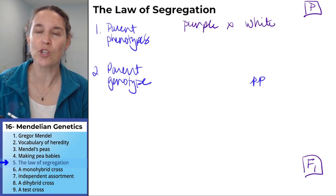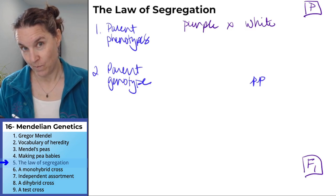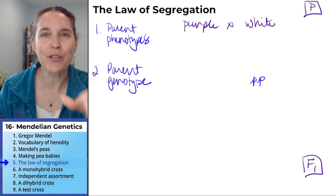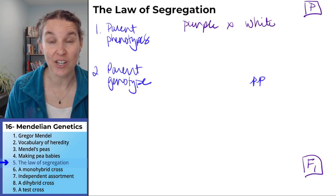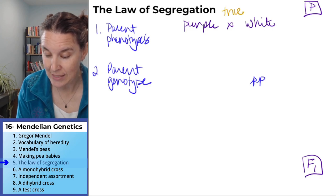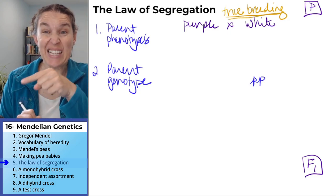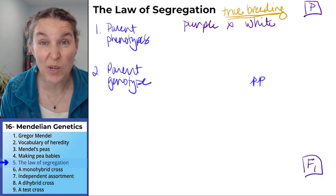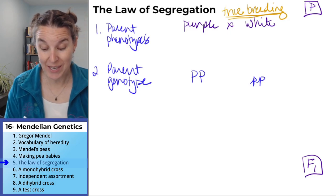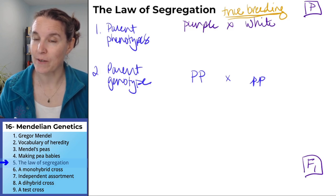How do we know whether the purple parent is heterozygous or homozygous dominant? The clue is that the parents were true breeding. If it's true breeding, it must be homozygous — and you'll be able to convince yourself of that soon. So we can say we're doing a homozygous dominant parent crossed with a homozygous recessive parent.